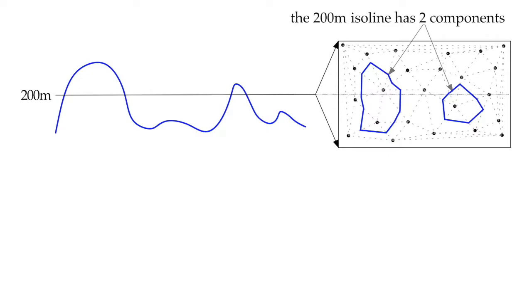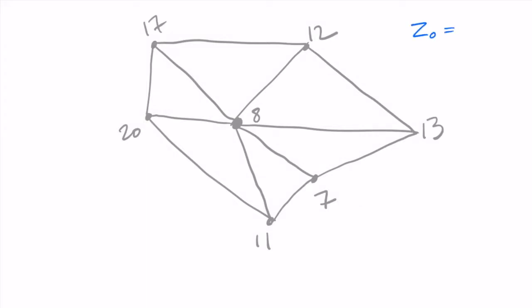Isolines are usually extracted from either a raster grid or a TIN — we need a complete surface to extract a set of isolines. The basic idea is to compute the intersection between a level value, for example 200 meters, and each cell of the terrain. Since we have a 2.5D surface, all processing can be done in 2D. We take individually every cell and linearly interpolate within each edge of the cell.